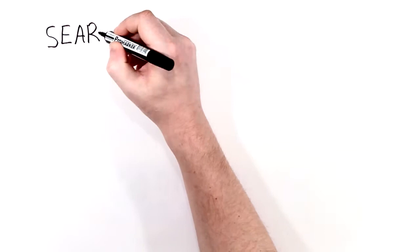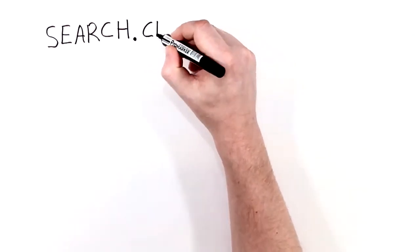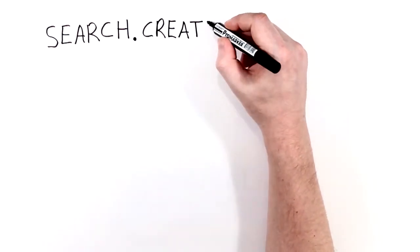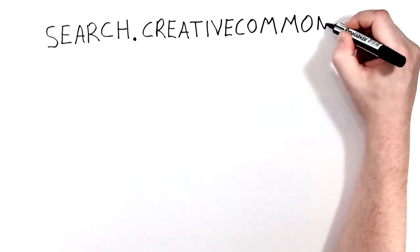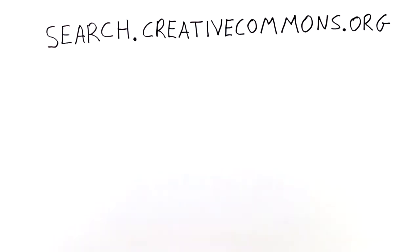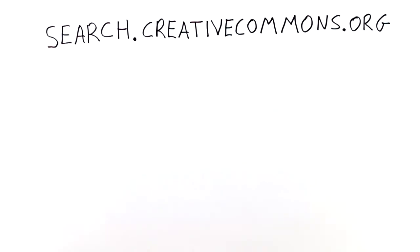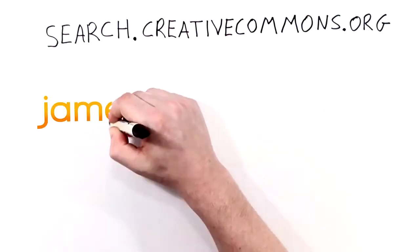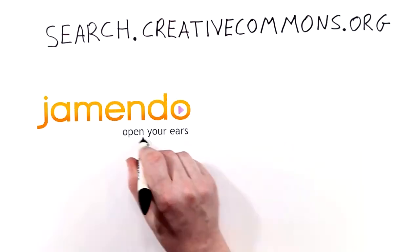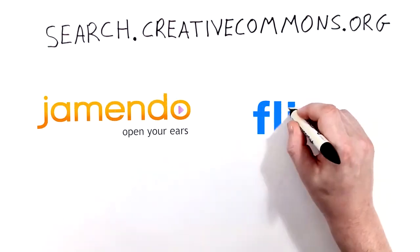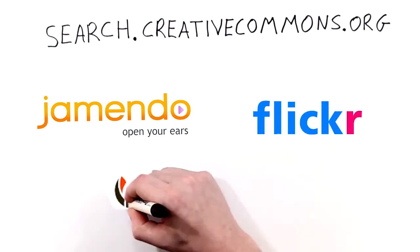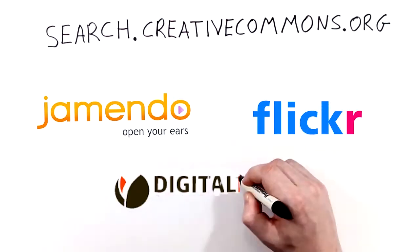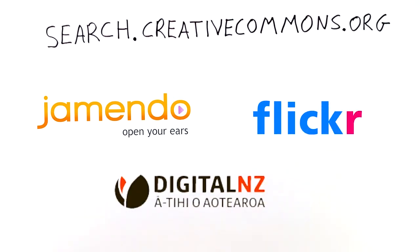There are some good ways to find other people's Creative Commons licensed work online. You can use a search filter by going to the Creative Commons website. Why not try the Jamendo website for music, Flickr for images, or Digital NZ for New Zealand content.